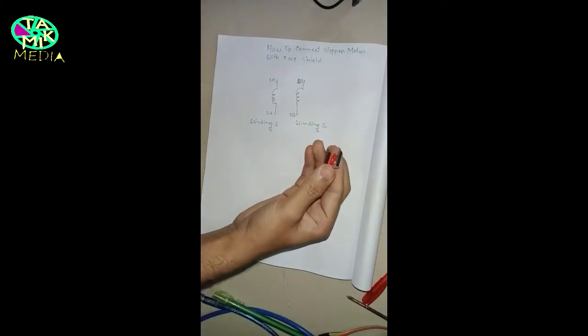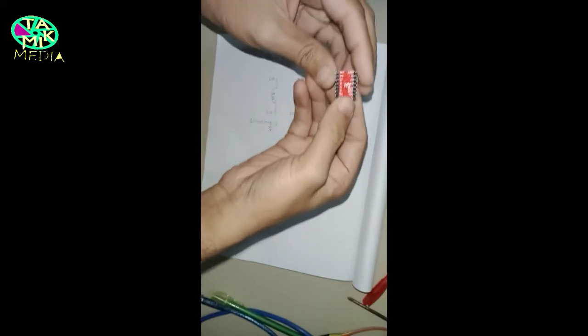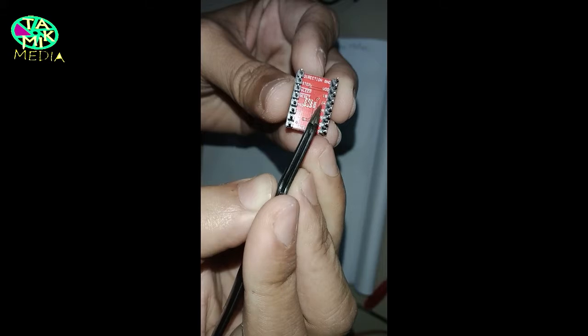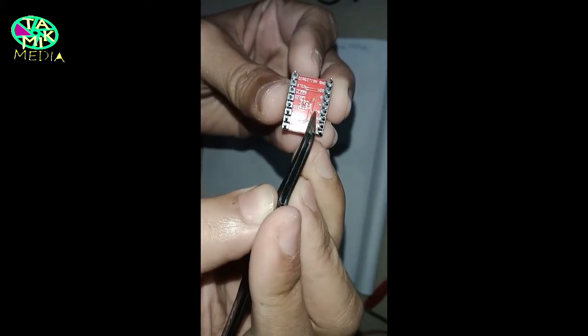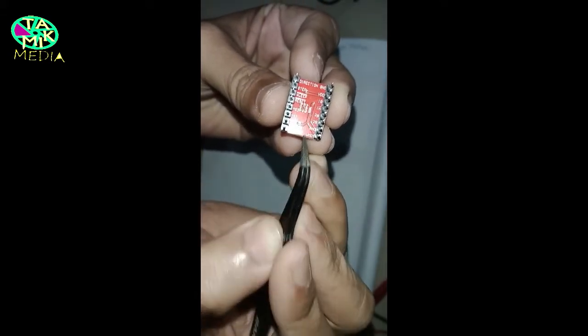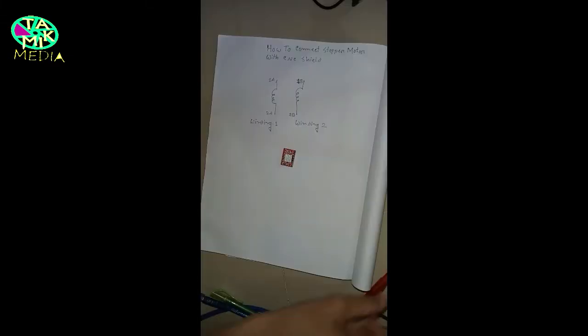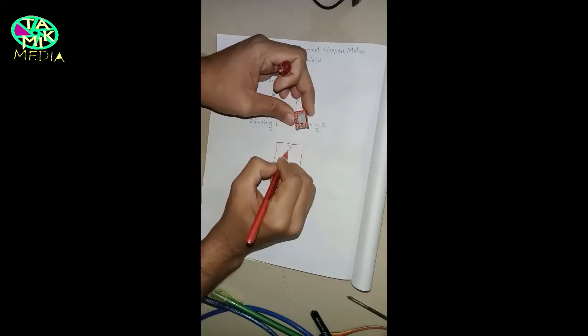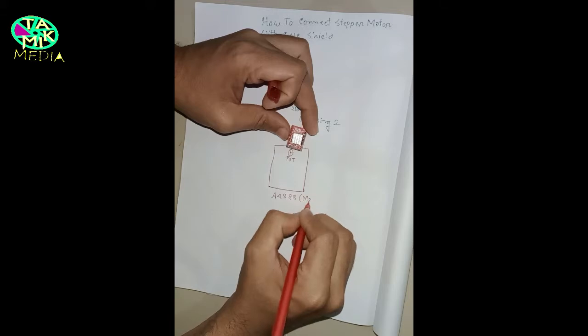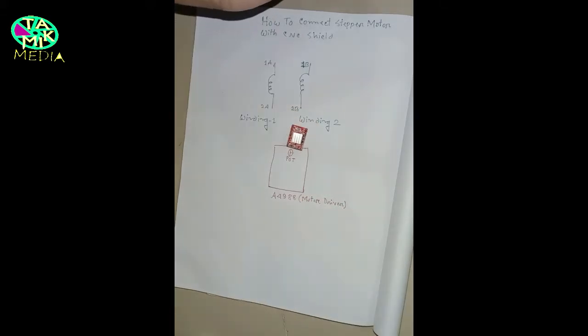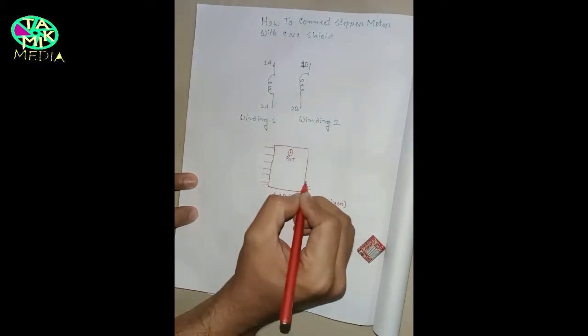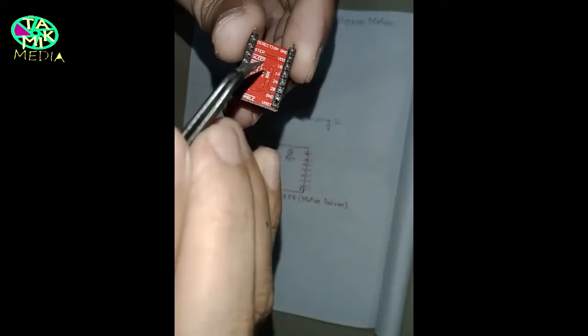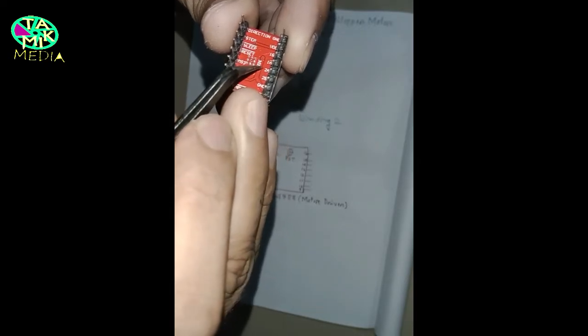I'm unmounting the motor driver so that you can clearly understand. 1B, 1A, 2A, 2B. Let's say this is the driver. And here are 16 pins of driver. Yeah, I need to work with all A and B pins.